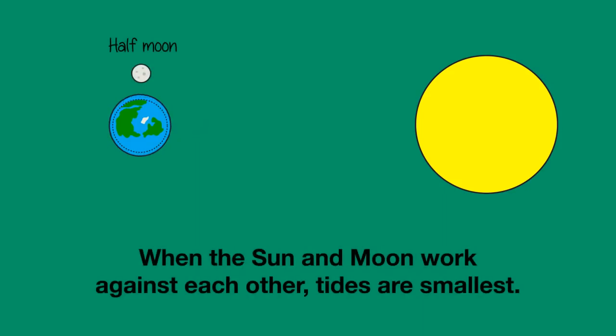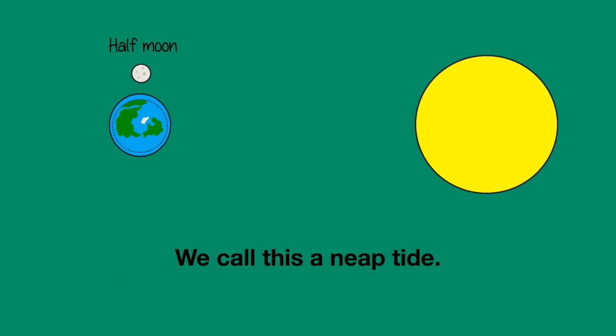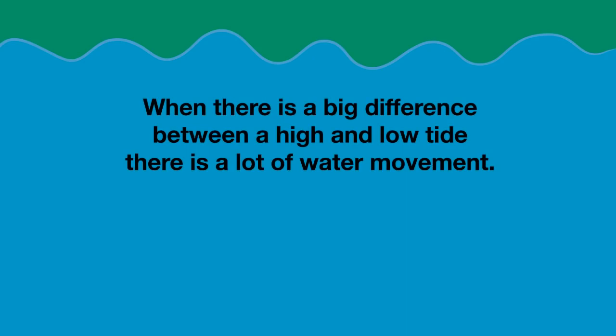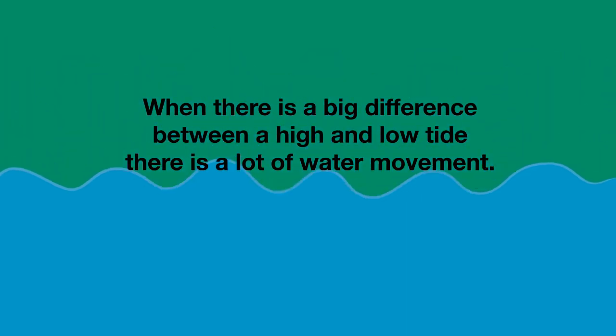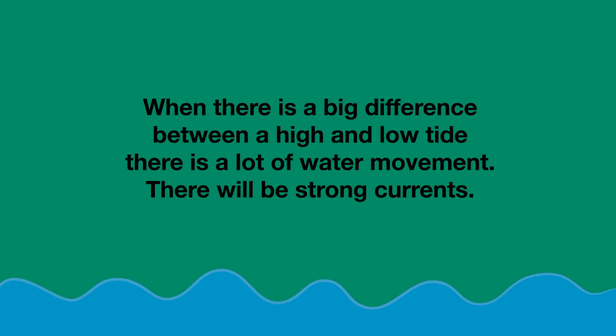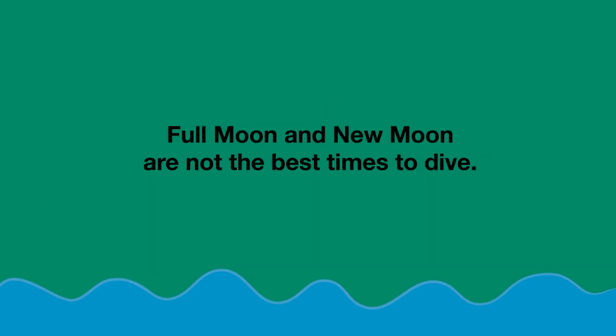When the Sun and the Moon are located at 90-degree angles to each other — you can see this in the sky as a half Moon — they work against each other and the tides are smallest. We call this a Neap Tide. When there is a big difference between high and low tide, there is a lot of water movement, which means there will be strong currents. Full Moon and New Moon are not the best times to dive.